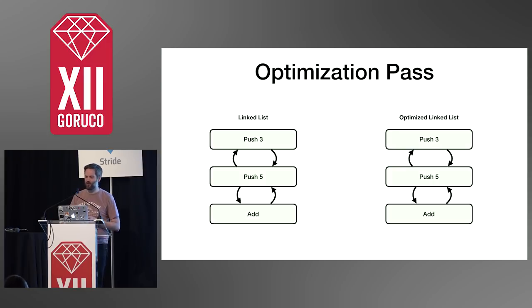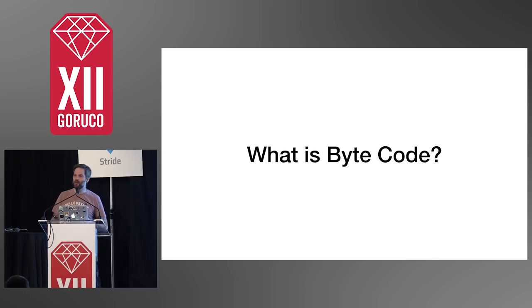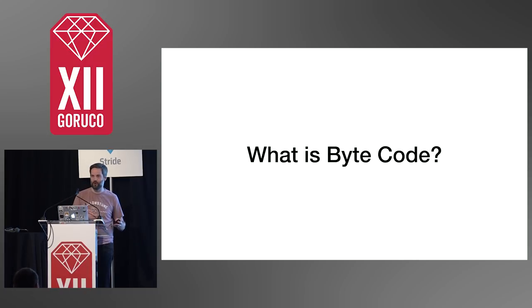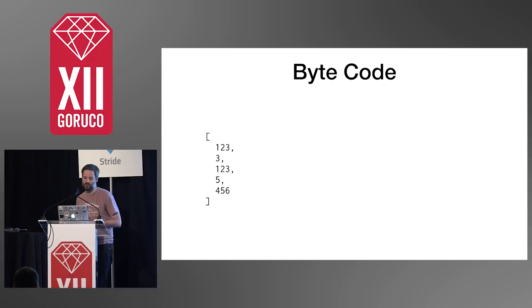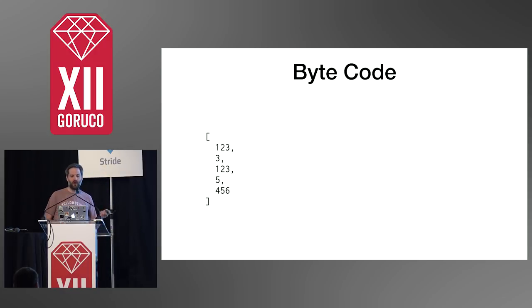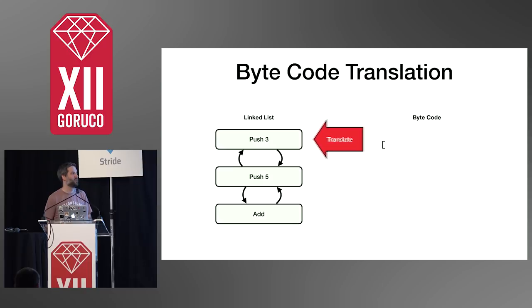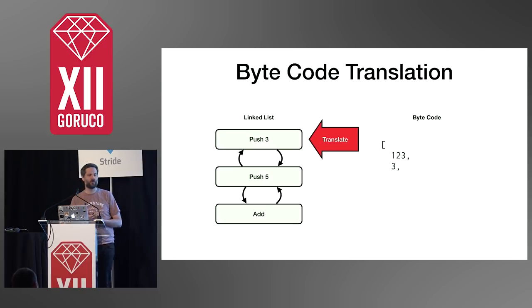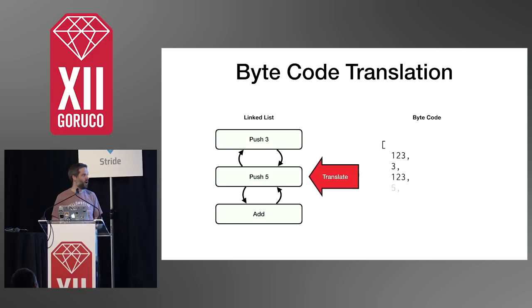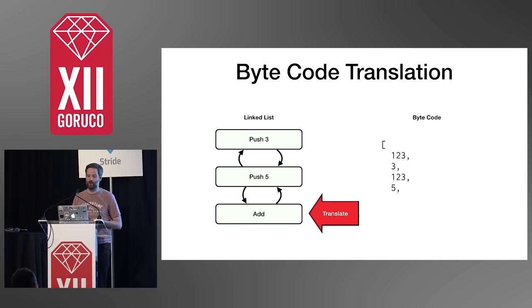Before we talk about bytecode, what is the bytecode executed by the virtual machine? This bytecode is actually just a binary representation of your code — a binary representation of the instructions and operands that is going to execute — and it's literally just a list of numbers, a list of integers. What we do to get this list of integers is walk that linked list. We say: I have a push instruction here — push three — so I need to convert that into bytecode. The push instruction is represented by some numbers, and the operand is just three. Same thing for push five, and add is represented as another set of numbers.